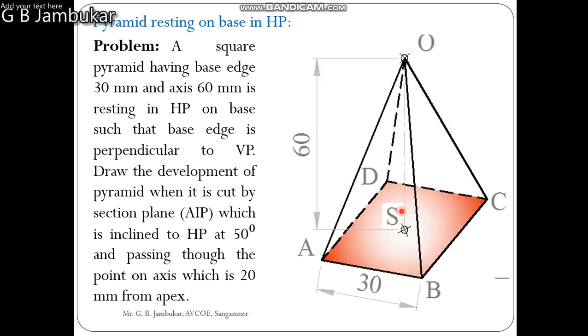We observe the 3D diagram of the square pyramid. The base is a square ABCD, its edge is 30 mm, axis height of the square pyramid is 60. All the faces are isosceles triangular, all these faces are connected to the apex.